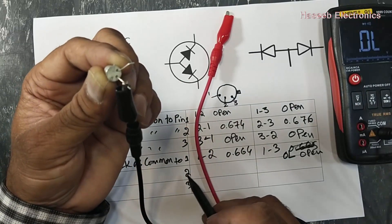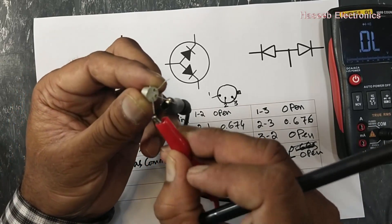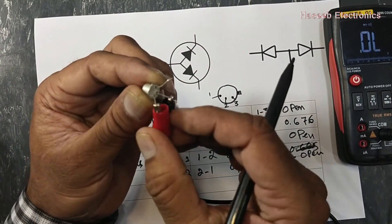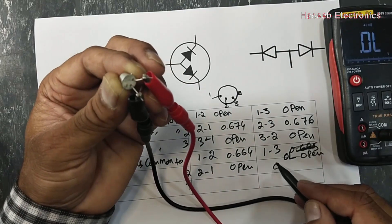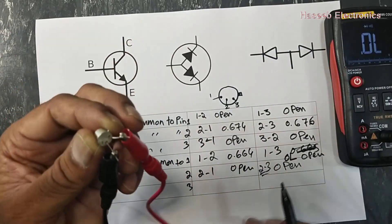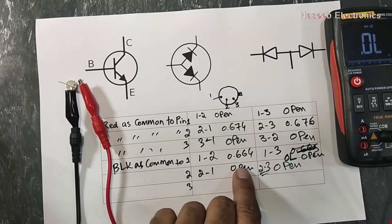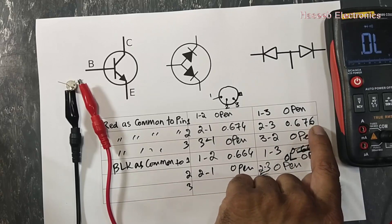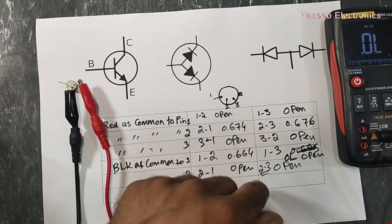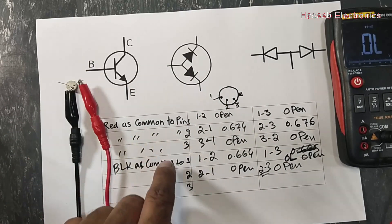Now move black lead to pin number 2 and take reading between 2 and 1 — it is open. And 2 and 3 — open. If we check this step: pin 2 and 1 was giving 0.674 before, but here it is open. Pin 2 and 3 was giving 0.676 before, but now it is open — because the probe combination has changed. Before this the red lead was common; now the black lead is common.